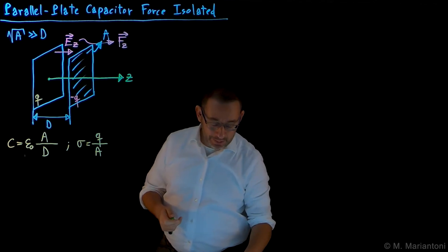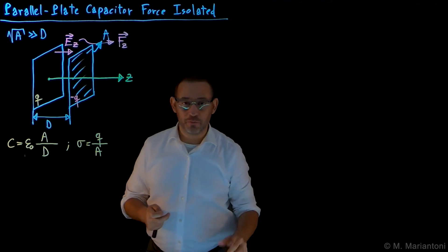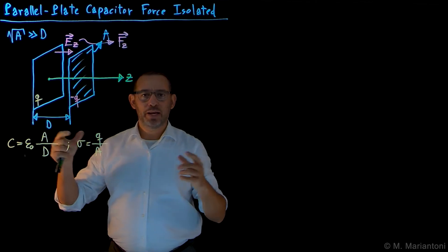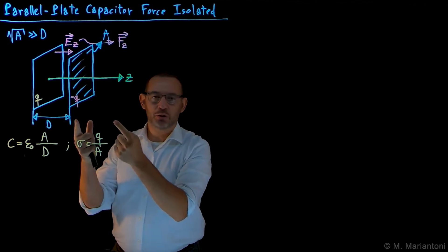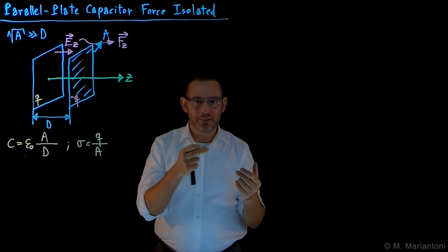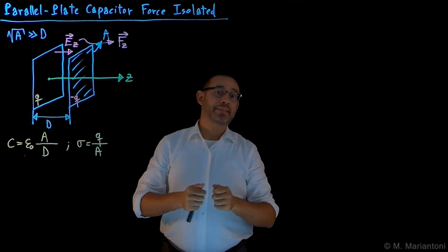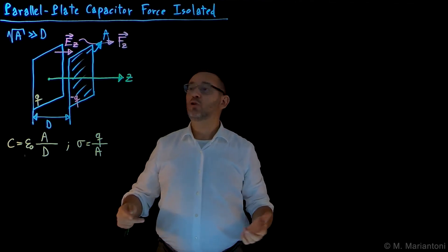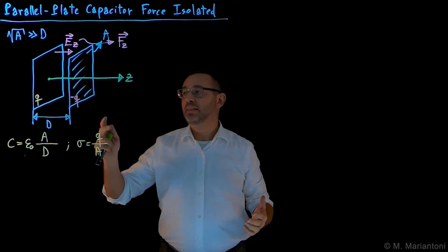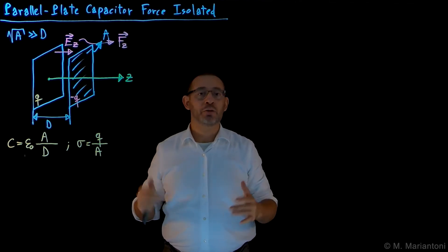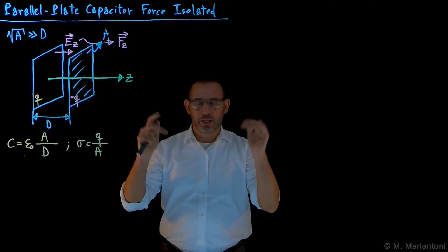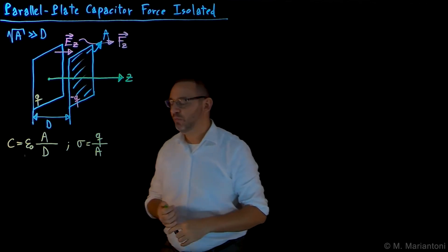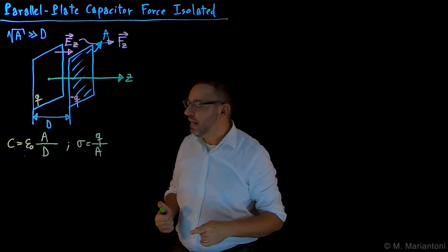In order to prepare this system in an isolated configuration, first we connect it to a battery to charge it with plus Q and minus Q respectively. Then we disconnect the battery and don't allow the plates to touch each other, so they are globally and locally isolated — this is Case 1 from the previous videos about force on conductors.